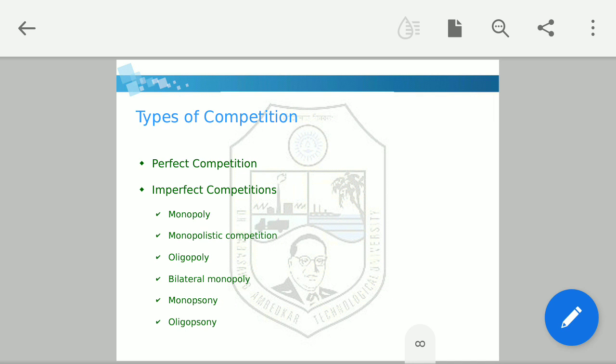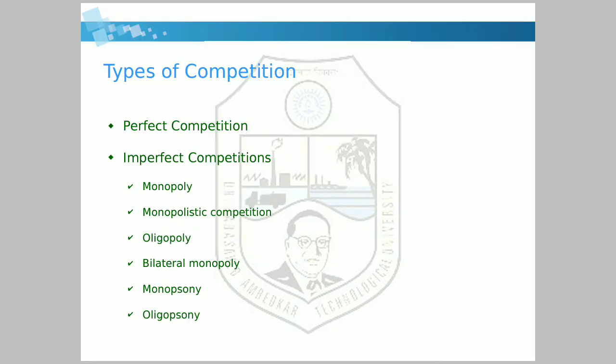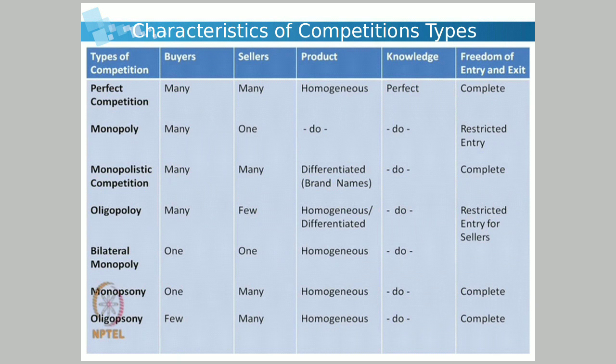Every market has competition. There are two types: perfect competition and imperfect competition. Under imperfect competition there are further types — monopoly, oligopoly, bilateral monopoly, monopsony, and so on — which we will see in detail.